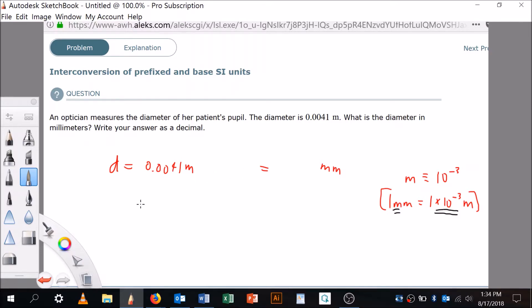So that said, we now know how we can do our conversion. We need to bring millimeters in here, right, because it's here and we need to get rid of meters because it's here and we want to cross it off.